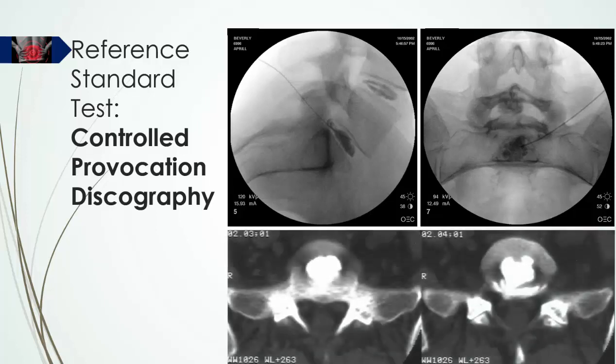Immediately after the discography examination, the patient was taken into an adjacent room and a CT examination performed within 30 minutes. To confirm a disc as the source of pain, fissuring of the annulus must be demonstrated such that the outer one-third of the disc — the part known to be innervated — is reached by contrast.